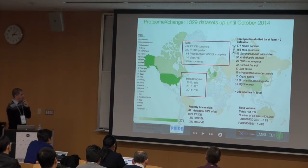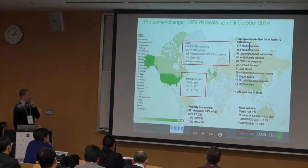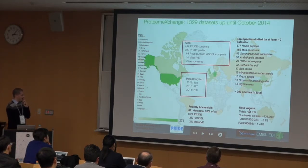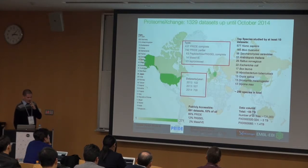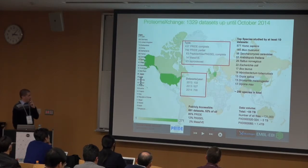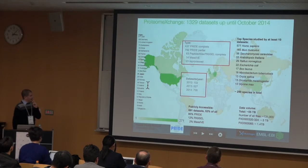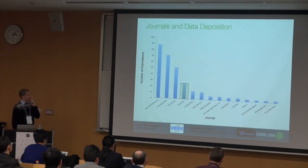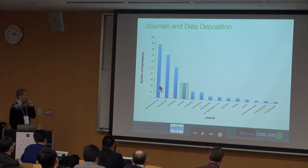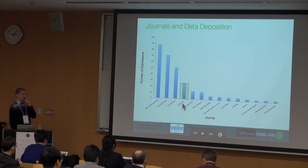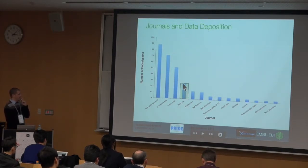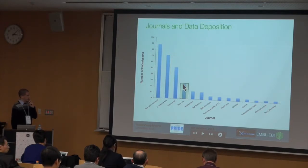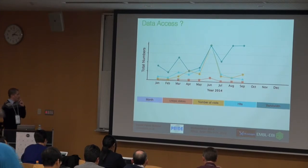The number of datasets is growing — we have more than 500 submissions and projects, and the volume of data is also growing. The number of submissions is well distributed around the world. It is becoming more and more common that submitters provide their raw data in one of the repositories every time they publish a paper. This is reflected in the number of submissions by journal — even PLOS ONE, which is not a dedicated proteomics journal, contains more than 20 ProteomeXchange submissions, and access is increasing.